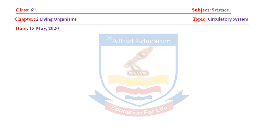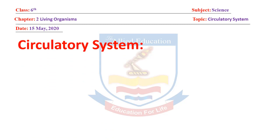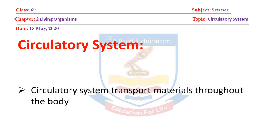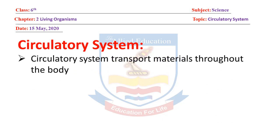Friends, welcome to my class. Today's chapter is Chapter Number 2: Living Organisms, and today we will discuss the circulatory system. The circulatory system transports materials throughout the body — circulatory system ka kaam yeh hai ki yeh materials ko poore jism mein transport karta hai.